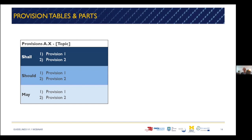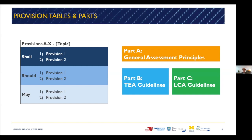Each chapter in the guideline concludes with provision tables. These provisions have three levels: SHALL, SHOULD, and MAY. SHALL provisions are the minimum requirements for achieving a standardized TEA/LCA. SHOULD provisions cover a recommended level of analysis and produce a TEA/LCA of greater depth. MAY provisions produce the most detailed TEA/LCA. Overall, the guideline is structured into three parts: part A, general assessment principles covering aspects relevant for both TEA and LCA; part B, TEA guidelines; and part C, LCA guidelines. Each part will be discussed separately.